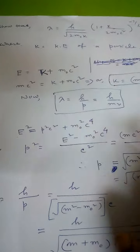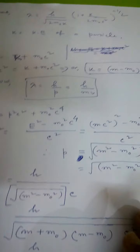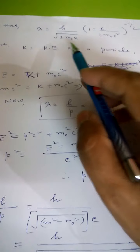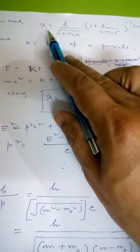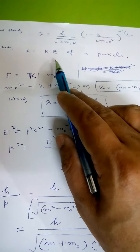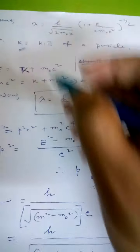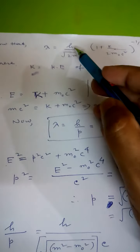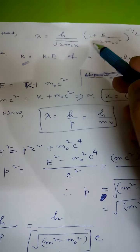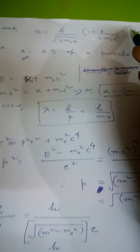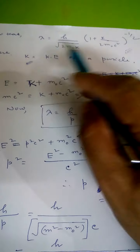In our next problem, that is problem 5 — this is a very important and very useful problem, and it usually appears in semester exams. It is also equally important from an academic interest standpoint. You have to establish this relation: the de Broglie wavelength of a particle of kinetic energy k equals h divided by sqrt(2*m₀*k) times (1 + k/(2*m₀c²))^(-½).